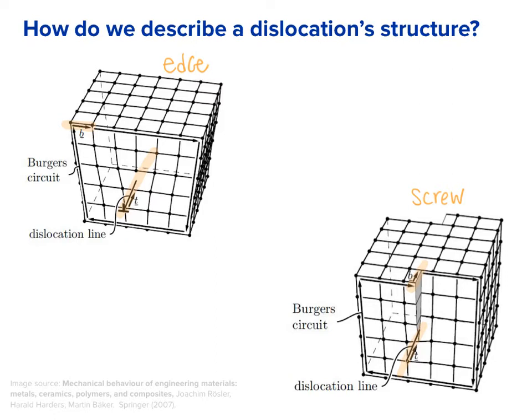An important thing to note is the relationship between B and T. For an edge dislocation, the Burgers vector is perpendicular to the dislocation line. For a screw dislocation, the Burgers vector is parallel to the dislocation line — even though they may be shown at different positions, they are parallel in the crystallographic sense.